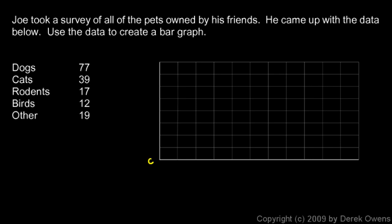So I'll call this 0 down here, and we'll just go up by 10s. We're going to get up to as high as 80, and all of our data will conveniently fit on the graph in that case.